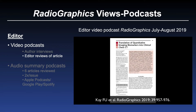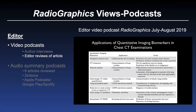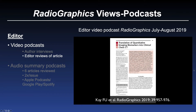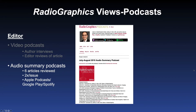The second type of podcast is my review of a current article — for example, the use of quantitative imaging biomarkers extracted from chest CT studies. The third type are the audio summary podcasts, where in about a 20 to 25-minute podcast — again, two per issue — I review six articles in each of the two podcasts. You can access these through Apple Podcasts, Google Play, or Spotify to subscribe, or you can listen to them directly on the journal homepage.